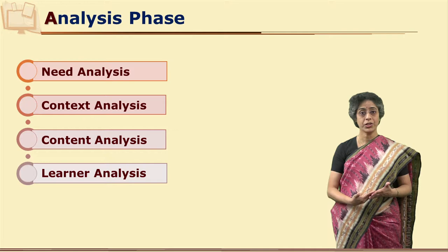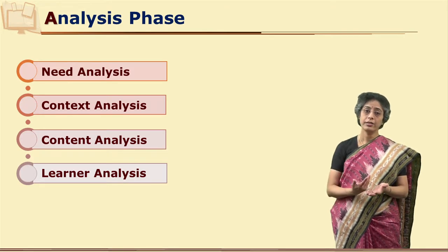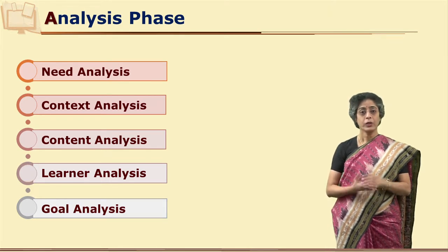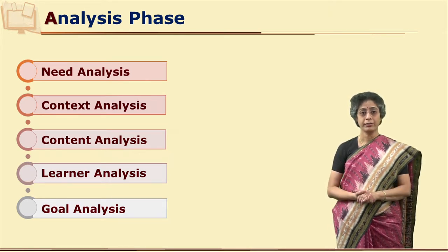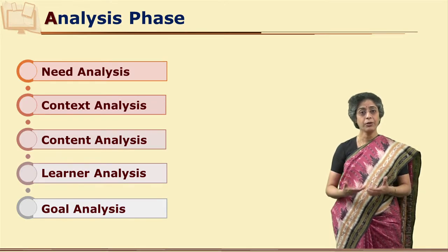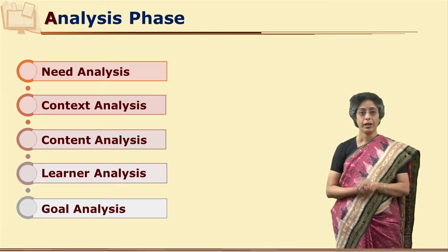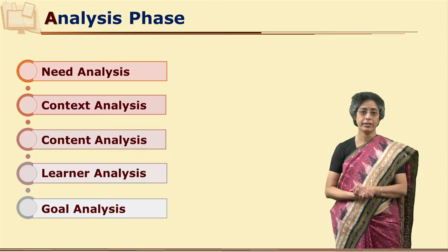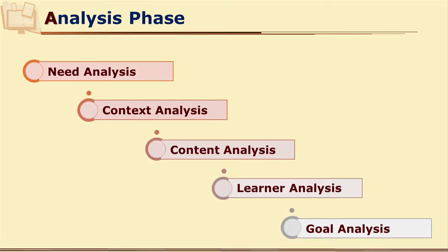Learners' previous knowledge and entry behaviour are very crucial. And the last is goal analysis. As content is important, goals of learning are important. If we analyse goals and derive performance objectives and outcomes, it will help us write and develop open and distance learning material. So, after this detailed analysis of need, context, learner, content, and goal, we start designing.